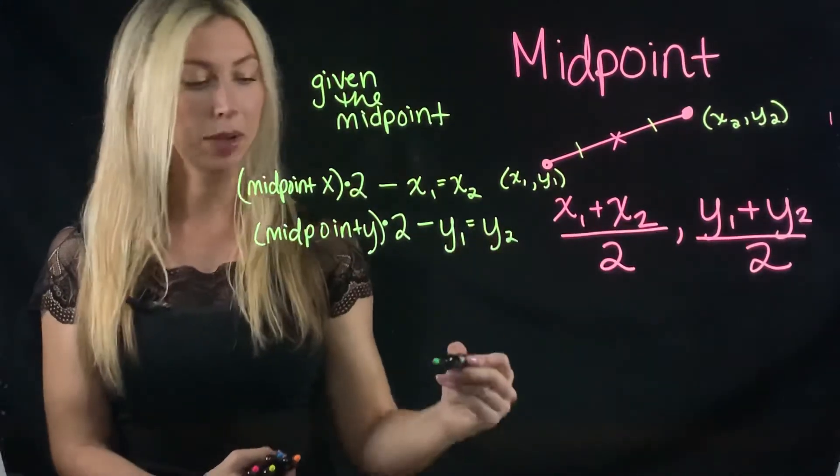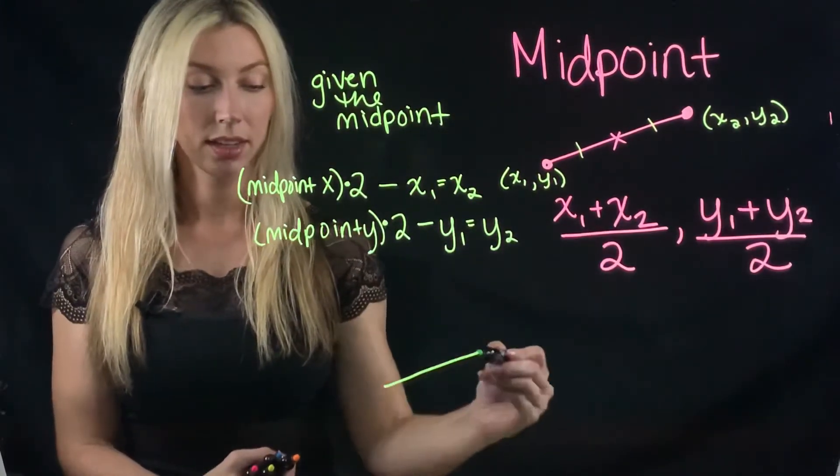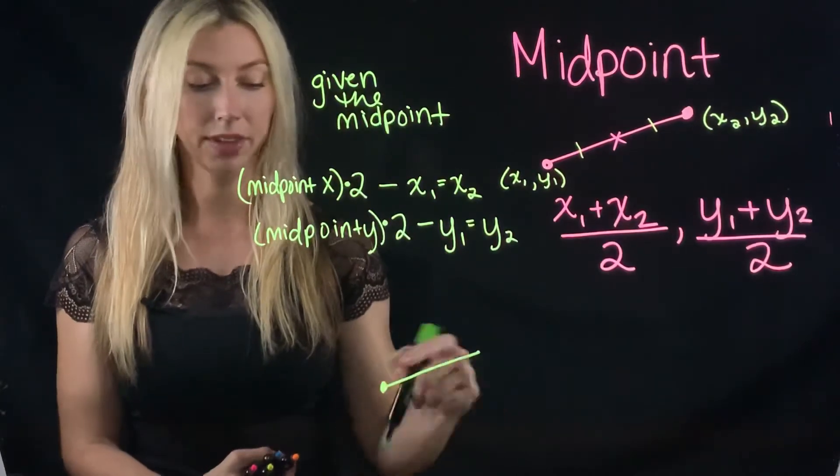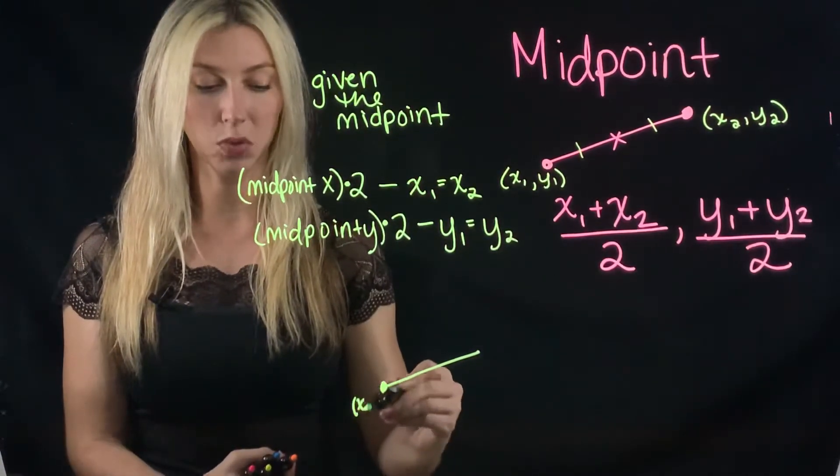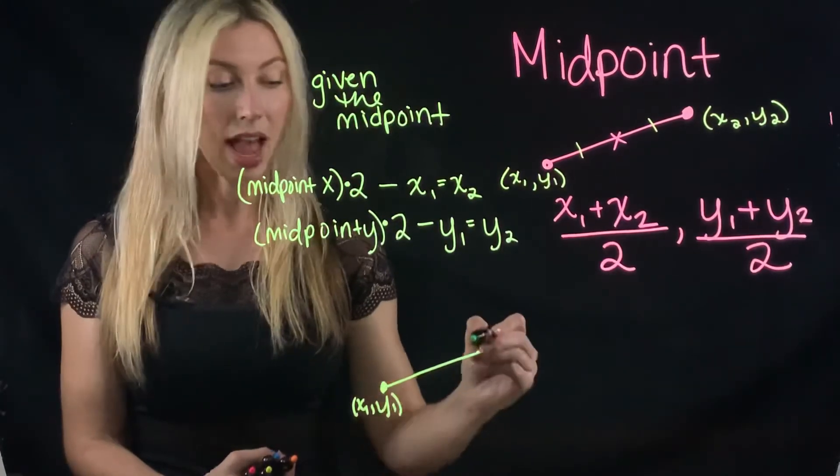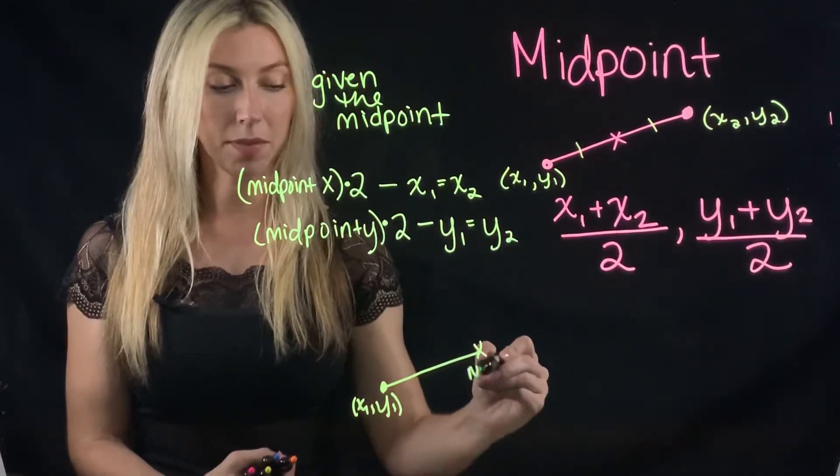Another way, like I was explaining before, I would graph it. And a lot of times you'll have one of the endpoints that says that's x1, y1. And then right here, this is going to be the midpoint.